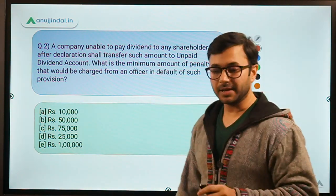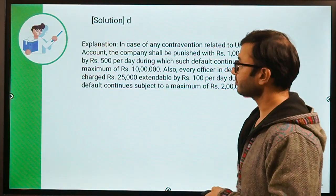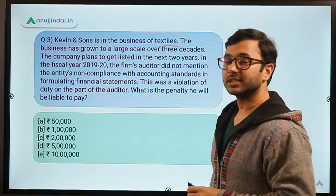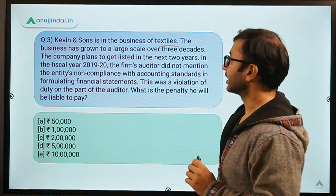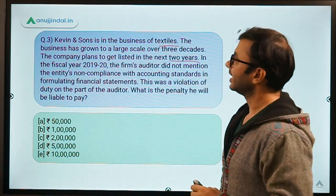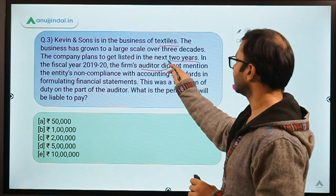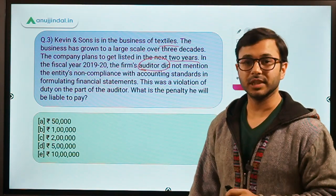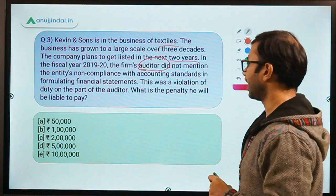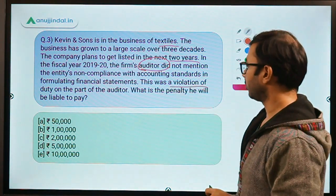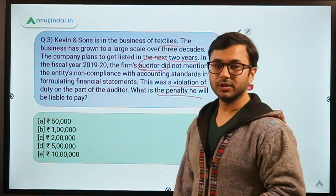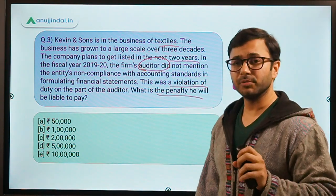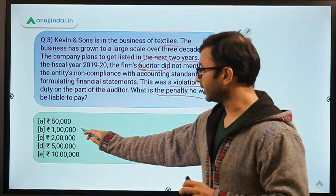Question number three: Kevin and Sons is in the business of textile. The business has grown to a large scale over three decades and the company plans to get listed in the next two years. In the fiscal year 2019-20, the firm's auditor did not mention the entity's non-compliance with accounting standards in formulating financial statements. This was a violation of duty on the part of the auditor. What is the penalty? The answer to this question is B — 1 lakh.